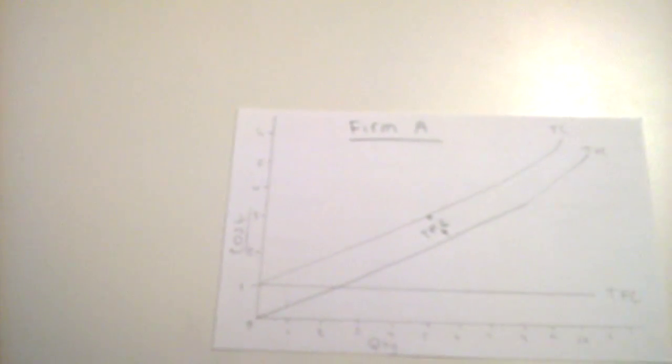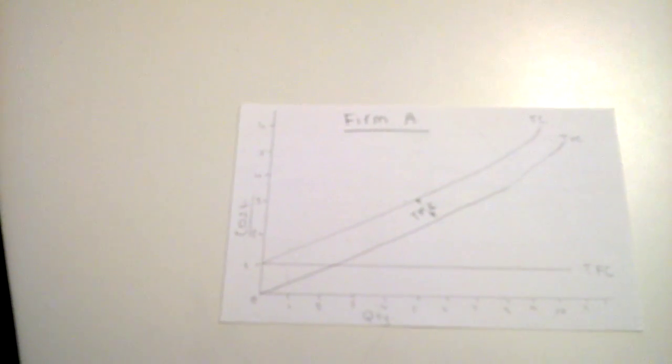An example of total variable cost in our life is the electricity bill. If we use more electricity, our bill is going to increase.